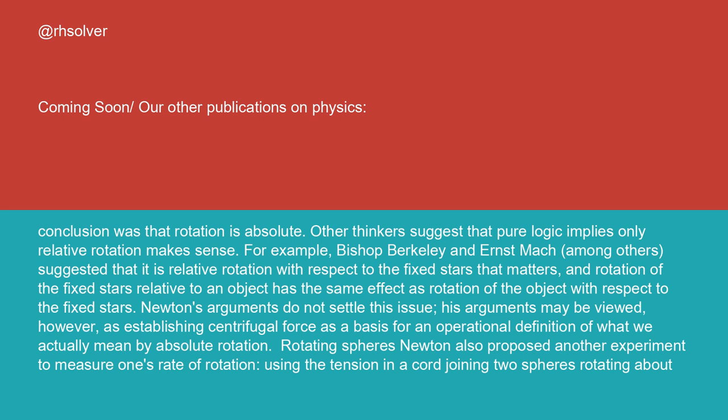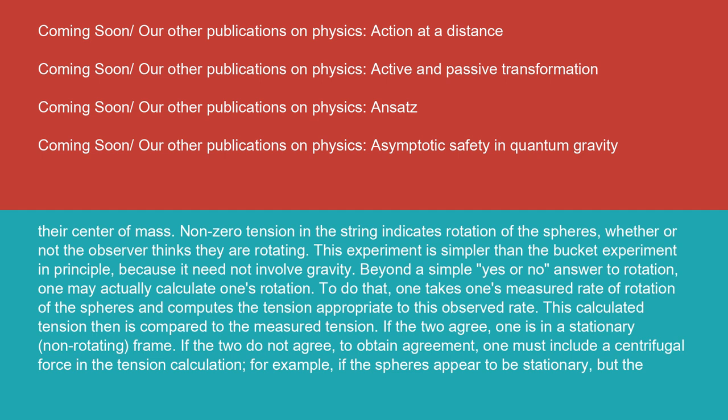Newton also proposed another experiment to measure one's rate of rotation, using the tension in a cord joining two spheres rotating about their center of mass. Non-zero tension in the string indicates rotation of the spheres, whether or not the observer thinks they are rotating.